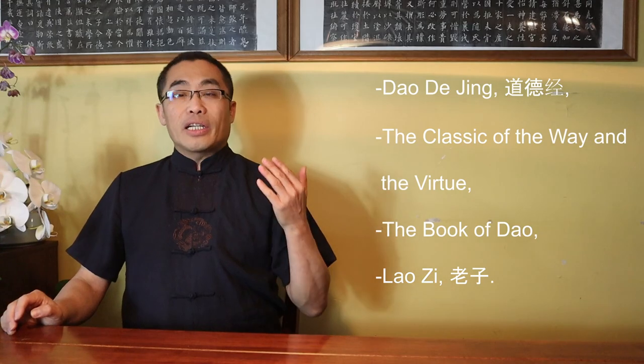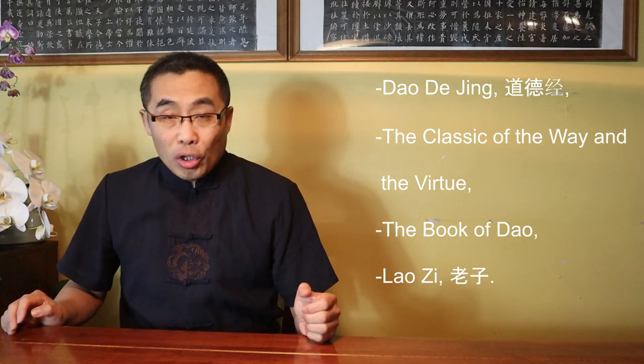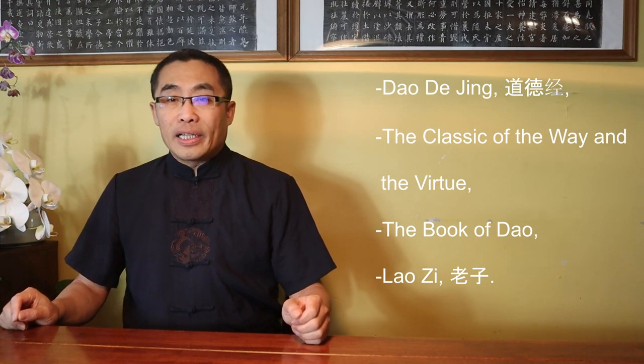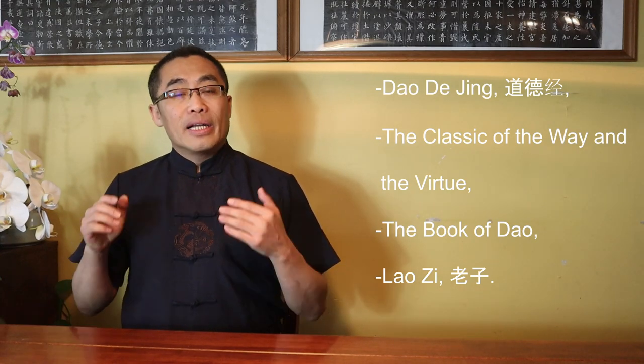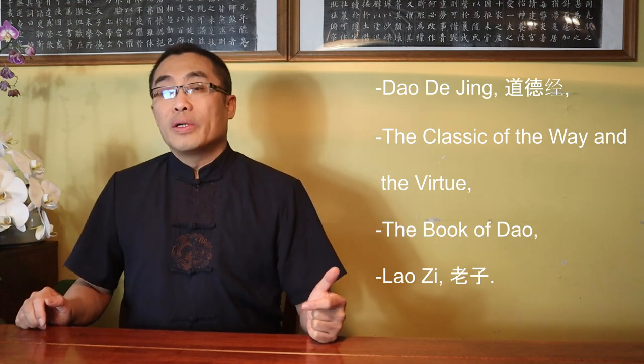Dao De Jing literally means the classic of the Way and the Virtue, and is commonly translated as the Book of Dao. It's traditionally attributed to Lao Zi, though some scholars believe it was edited and compiled by Lao Zi based on the popular philosophical teachings of his time. Dao means the Way, De means Virtue, and Jing means Classic.